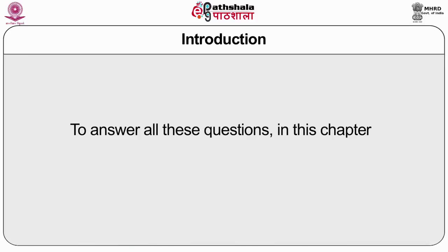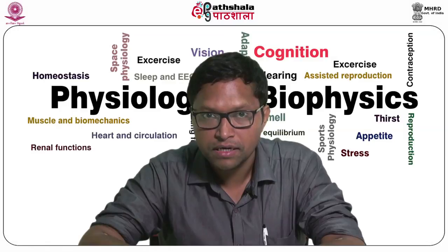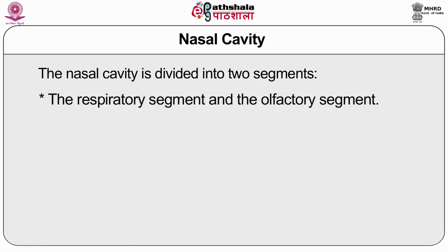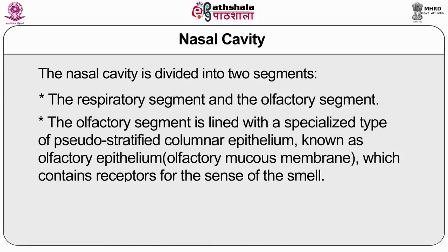To answer all these questions, in this chapter we will learn how smell works. The nasal cavity is divided into two segments: the respiratory segment and the olfactory segment. The olfactory segment is lined with a specialized type of pseudostratified columnar epithelium, also known as the olfactory epithelium or olfactory mucous membrane, and it contains the receptors for the sense of smell.